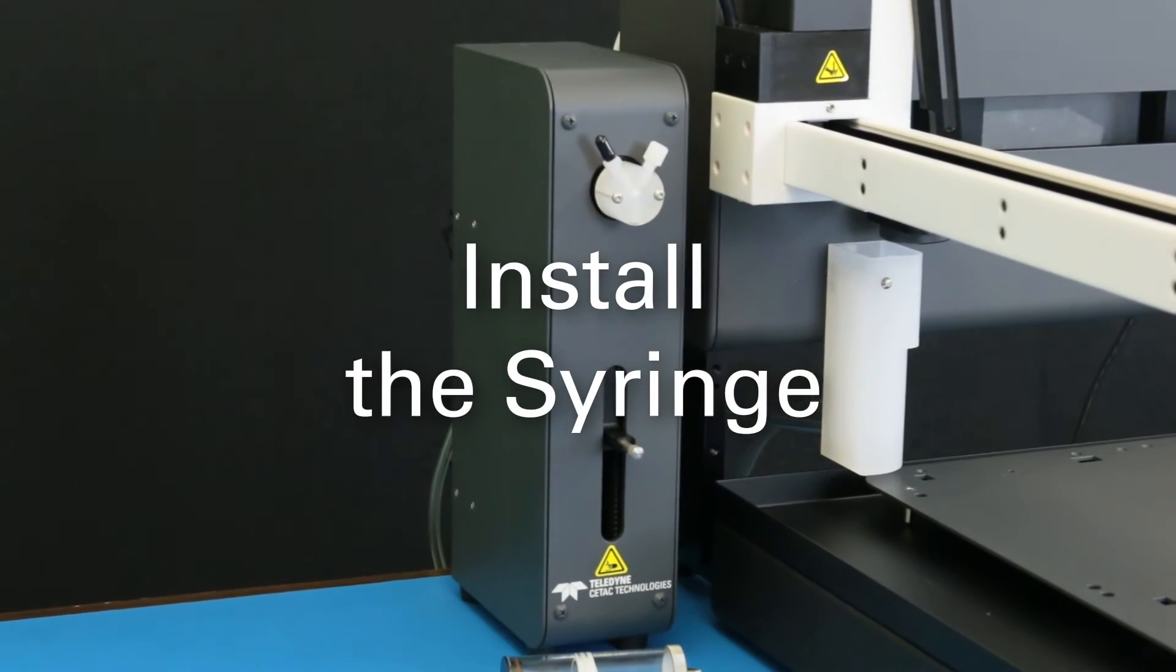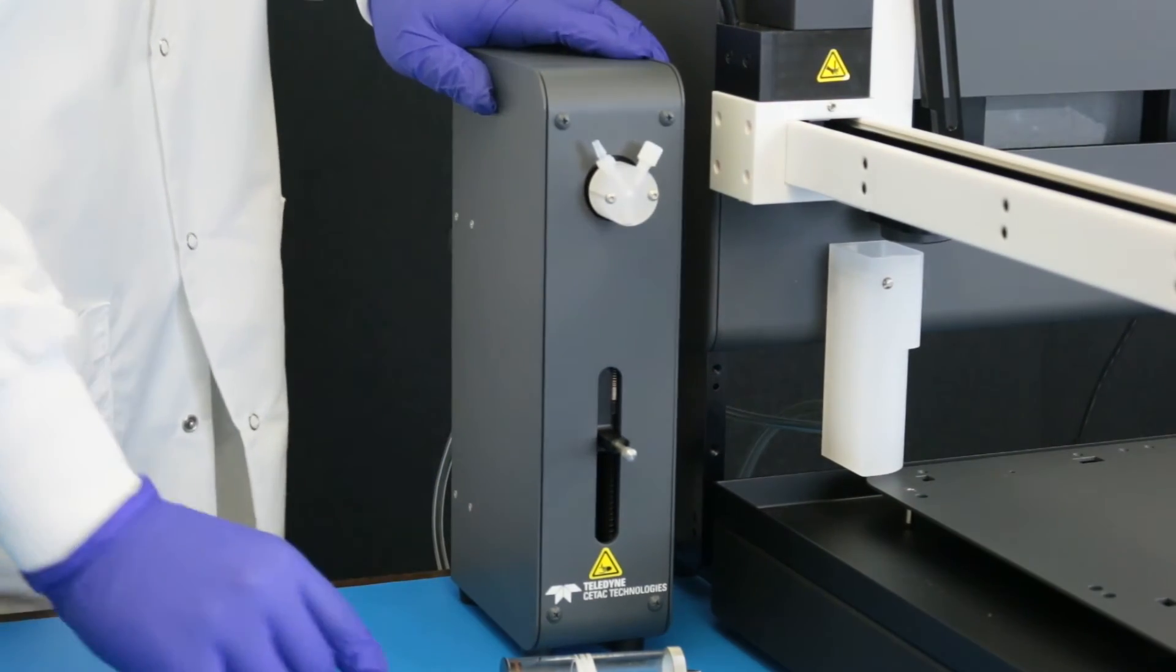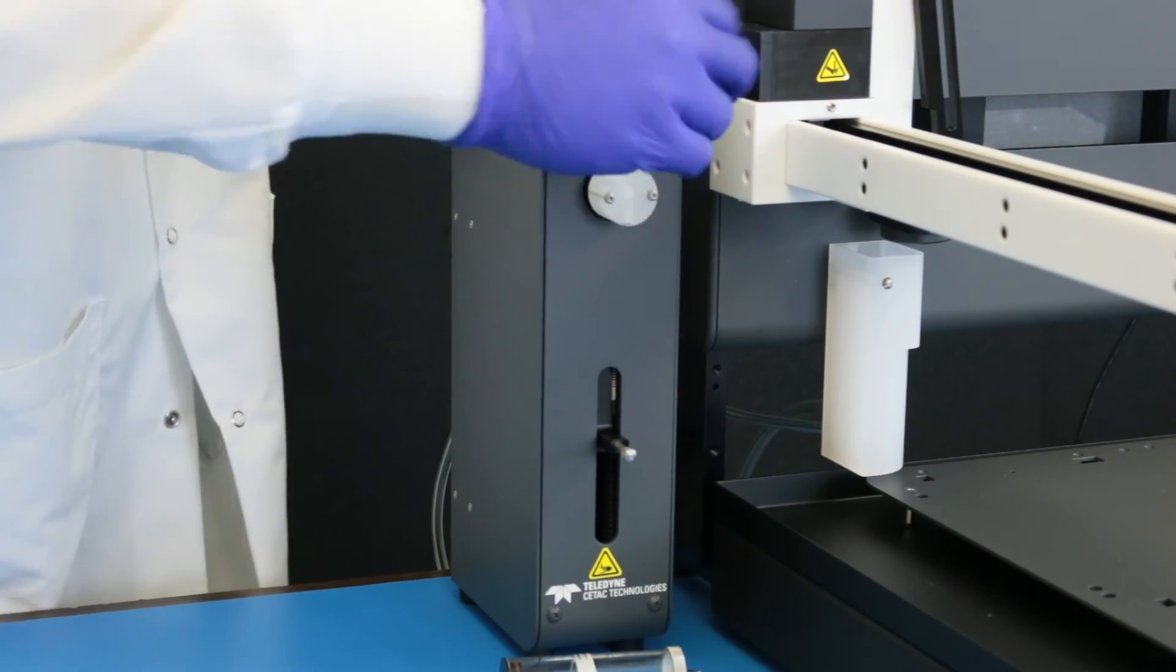Install the syringe. Remove shipping caps from the valve and the thumb screw from the probe's actuator arm.